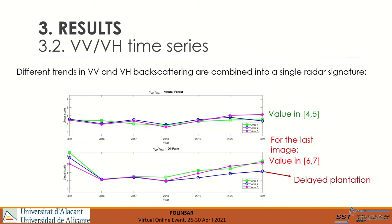Once the VH and VV channels have been analyzed, we have calculated the power ratio between VV and VH to see how these different trends are combined into a single radar signature. For the forest areas, the ratio between VV and VH remains fairly stable, between values of 4 and 5. However, for oil palm areas 1 and 3, there is apparently a clear increase, with the ratio in the interval 6 to 7 for the last image. Note, however, that for polygon 2 the behavior is different, as there is a slow decrease — a possible explanation being a delayed plantation within that particular area.